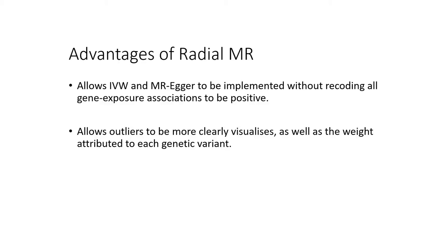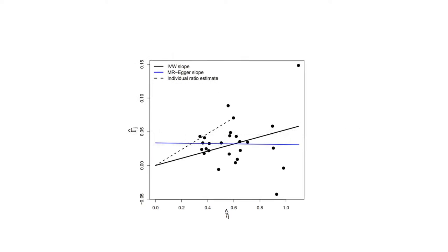To show the difficulty in identifying outliers using conventional approaches, here is a scatter plot constructed using 26 genetic variants. Gene-exposure associations are plotted on the x-axis and gene-outcome associations are plotted on the y-axis. A single genetic variant, highlighted in red, is contributing a substantial amount towards overall heterogeneity, yet it's not immediately clear from the plot which observation represents the outlier. The weighting attributed to each genetic variant is also unclear.